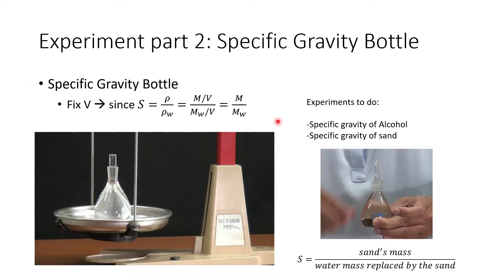In this part, the calculation gets slightly more complicated, but you can look it up on the worksheet provided. At the end of the day, you're going to have the specific gravity of alcohol and the specific gravity of sand.